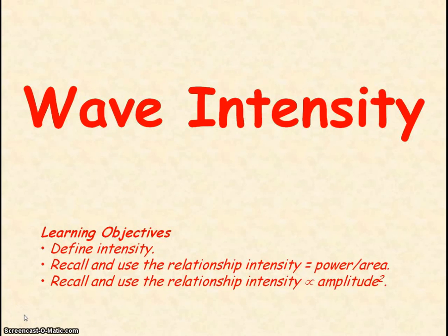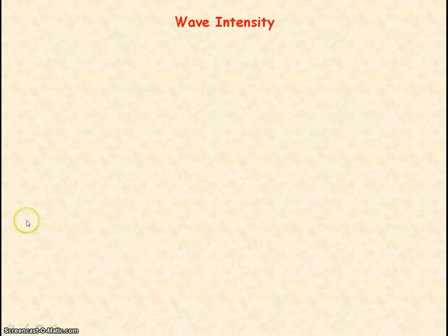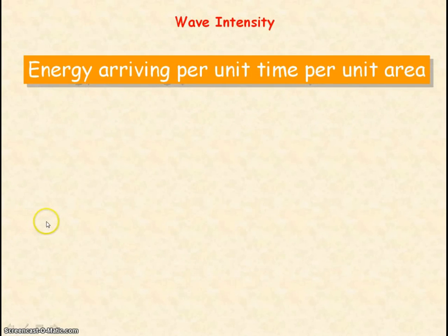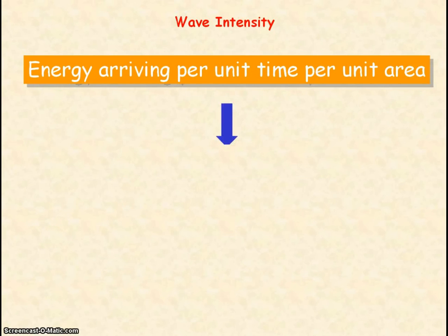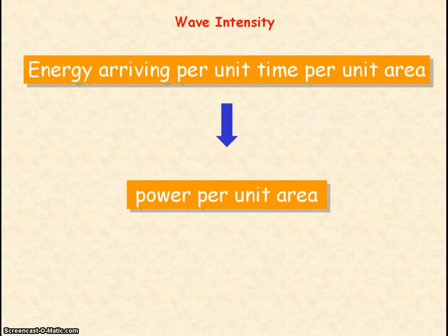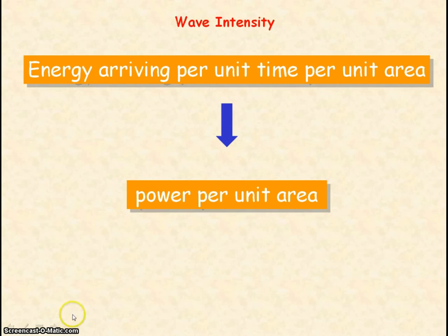We're going to be looking at wave intensity. Wave intensity is defined as the amount of wave energy arriving per unit time per unit area. The energy arriving per unit time represents power, so wave intensity represents wave power per unit area. The units of intensity are given by the units of power — watts — divided by the units of area — meters squared. So the units for intensity are watts per meter squared.